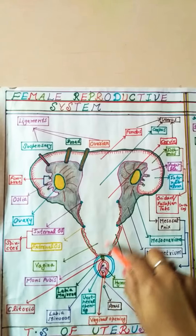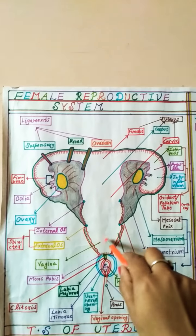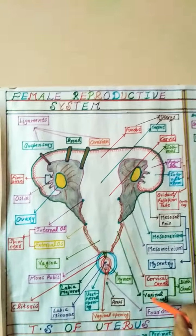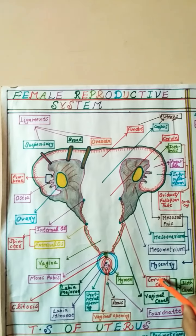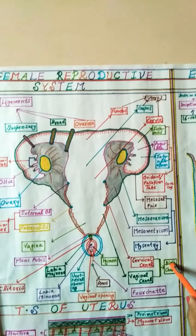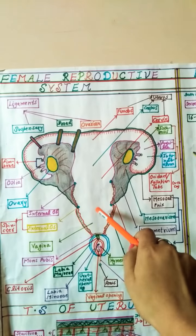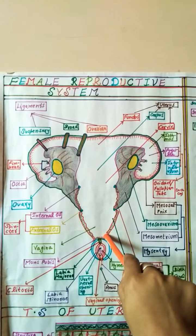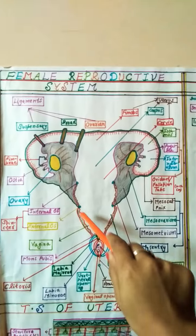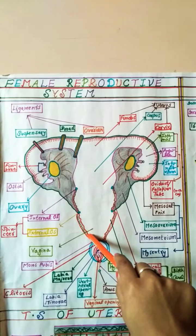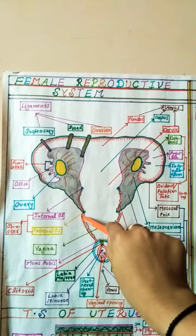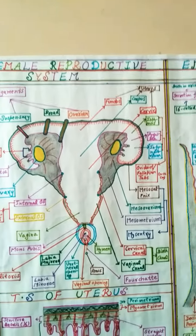Below the cervix is the vagina, which has a cavity called the vaginal canal. The vaginal canal and cervical canal together form the birth canal. The vagina is the non-glandular portion of the female reproductive system, and its inner lining is non-keratinized stratified squamous epithelium.